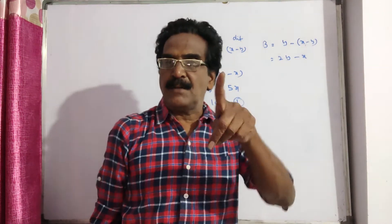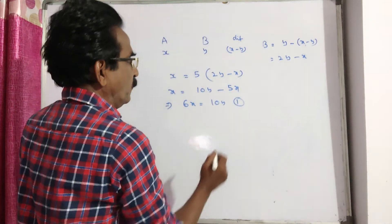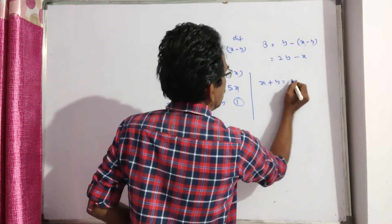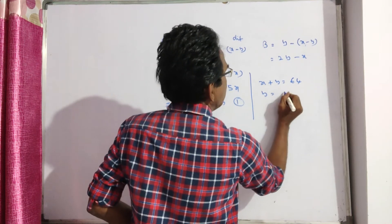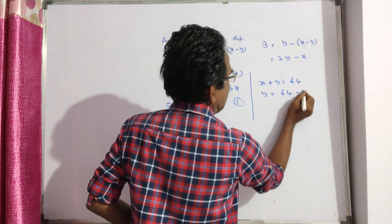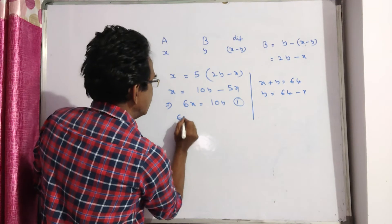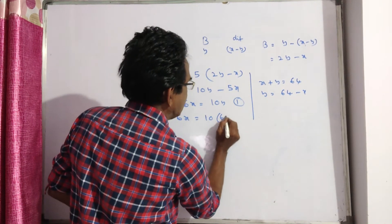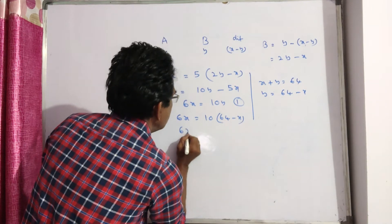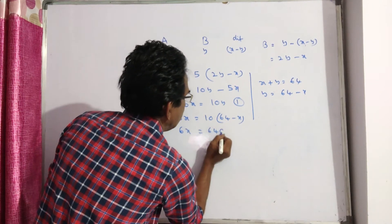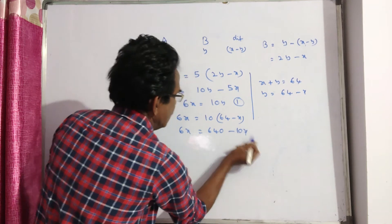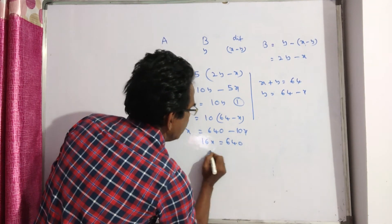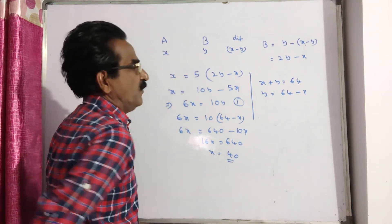And it is also given that the sum of the ages is 64, that is x plus y is equal to 64, or y is equal to 64 minus x. Substituting: 6x is equal to 10 into (64 minus x), which gives 16x is equal to 640, so x is equal to 40.